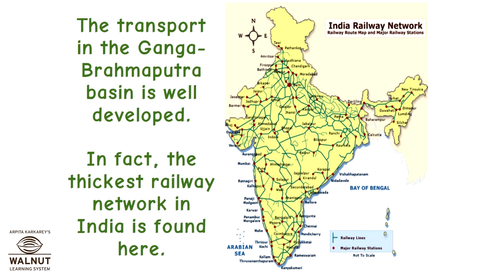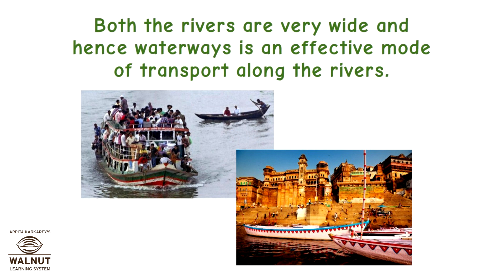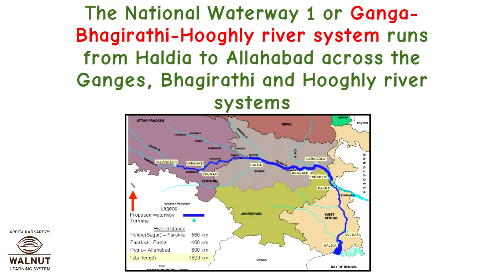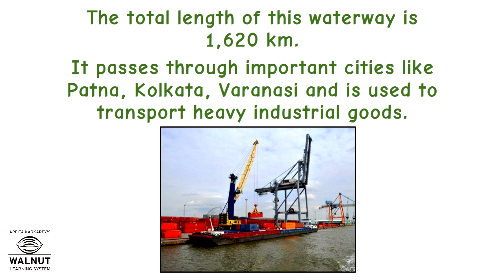The transport in the Ganga Brahmaputra basin is well developed. In fact, the thickest railway network in India is found here. Both rivers are very wide and hence waterways is an effective mode of transport. A lot of things are transported from one place to another using waterways. The National Waterway 1, or the Ganga-Bhagirathi-Hooghly river system, runs from Haldia to Allahabad, with a total length of 1620 km.